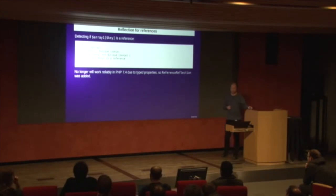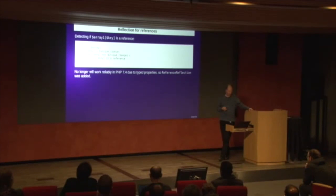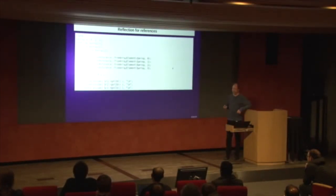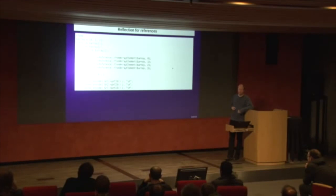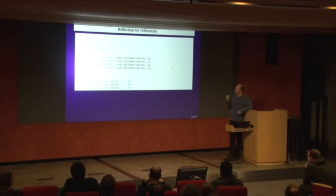Now we have reflection for references. This was added because Symfony does really weird things and it needs to detect whether something is a reference to something else. In 7.4 the old trick for doing this no longer always works. So what you need to do instead is the following: we construct an array with three elements starting with 0, 1, and 2. ref1 is a variable that references the first array element, ref2 references the second, and then we add another one that references back to number 2. This means that both ref2 and array[2] both point to the same reference — both can be considered references to the same data. And normally in PHP you cannot know this without using some tricks, which stop working in PHP 7.4.